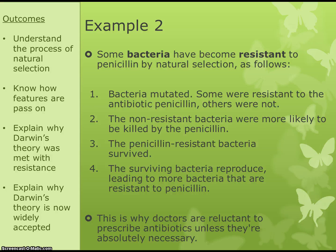Another example of natural selection is bacteria becoming resistant to penicillin. Bacteria mutated so that some were resistant to the antibiotic penicillin while others weren't. The non-resistant bacteria get killed by the penicillin, while the resistant ones survive and reproduce, passing on the resistance until all bacteria become resistant. This is why doctors are reluctant to prescribe antibiotics unless desperately needed — you're just weeding out the ones you can kill and increasing the proportion of ones you can't kill.